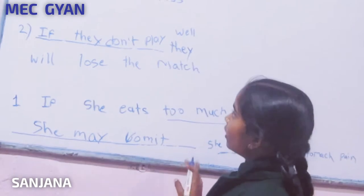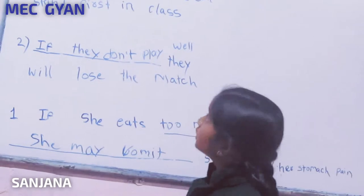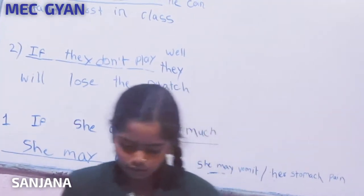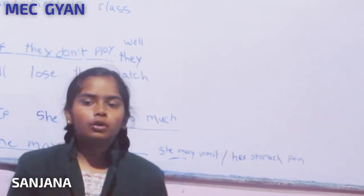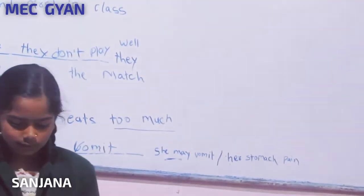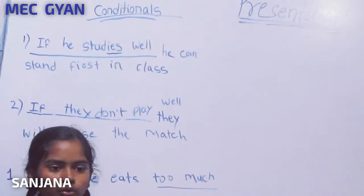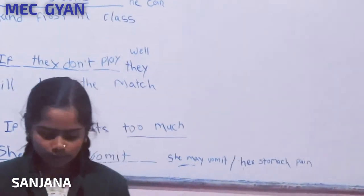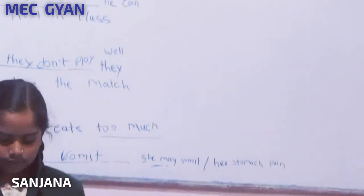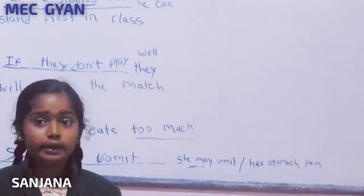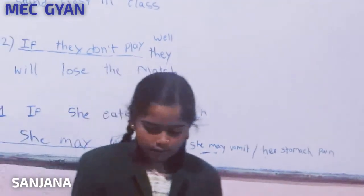So here, like this, we make conditionals. If you eat too much, your stomach may pain. If he eats out of control, his stomach will pain or his stomach may pain. So like that we make conditionals.